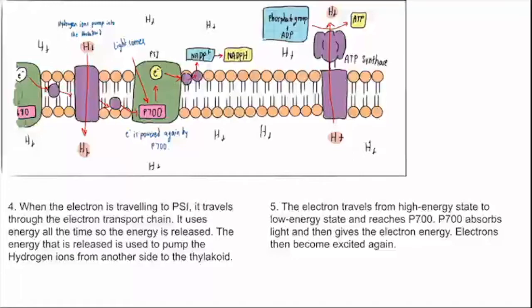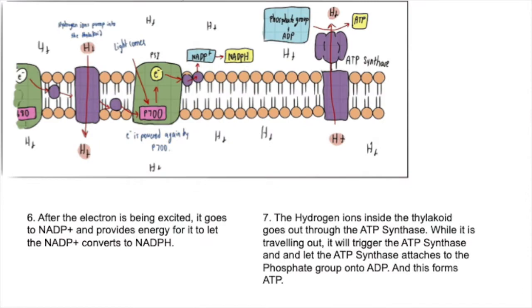The electron travels from high energy state to low energy state and reaches P700. The job of P700 is the same as P680. But for P700, it can absorb light for 700 nanometers. P700 absorbs light and then gives the electron energy. Electrons then become excited again. After the electron is being excited, it goes to NADP+ and provides energy for it to let the NADP+ convert to NADPH.